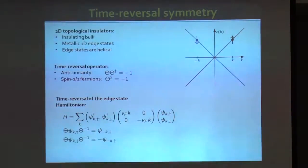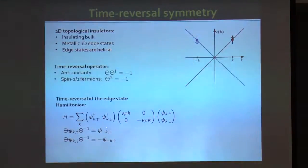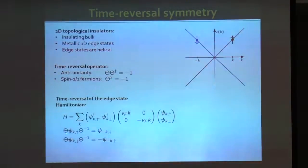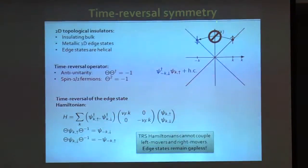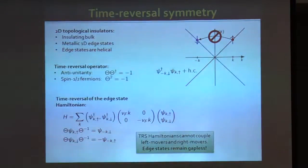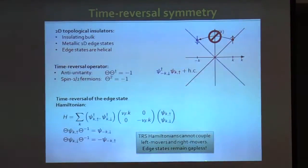Time reversal symmetry means that certain processes usually present in all other one-dimensional systems are prohibited here. Specifically, processes where a spin-up electron from the right Fermi point is scattered to a spin-down electron from the left Fermi point are ruled out. Time reversal symmetric Hamiltonians cannot couple left movers and right movers because they are Kramers pairs, which means these edge states remain gapless in the presence of perturbations that would otherwise couple these states.